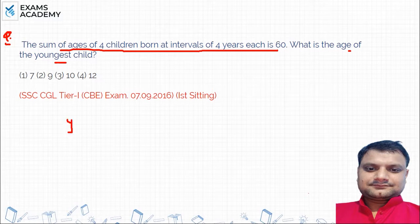Suppose the youngest child is age x. The youngest child is age x, and every 4 years one child is born. So x is the youngest. What will happen next? x plus 4. What will happen next? x plus 8. What will happen next? x plus 12.